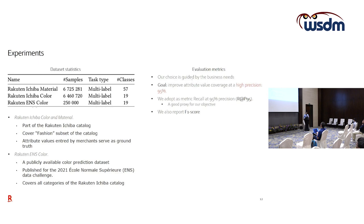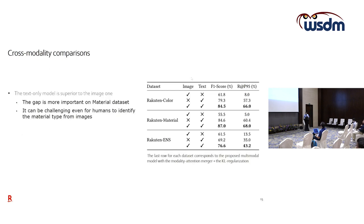Our evaluation metrics were driven by business requirements: the business wanted to improve coverage of attribute values at very high precision — specifically 95%. We therefore chose recall at precision 95%, which is consistent with business requirements. For completeness we also report F1 score, and used standard train/test/validation splitting. On cross-modality comparisons, the most important result is that on average the text model is superior to the image model.